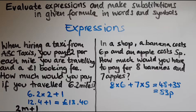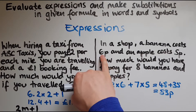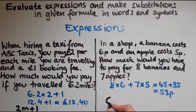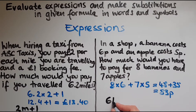How does this look in symbols? What did we multiply? It was 6 pence for each banana, so you could say 6b — 6 lots of b, 6 multiplied by b.